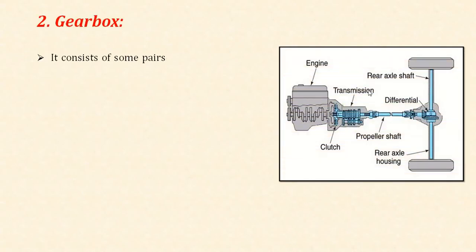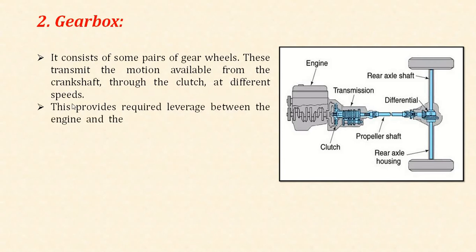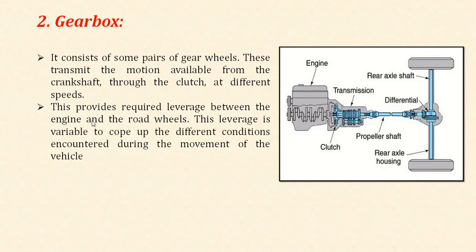The second component is the gearbox. It consists of pairs of gear wheels that transmit motion available from the crankshaft through the clutch at different speeds as per requirement. It provides the required leverage between the engine and the road wheels, and this leverage is variable to cope with different conditions encountered during the movement of the vehicle. The gearbox is connected after the clutch, and through different speed variations we can transmit power as per the requirement of the wheels.